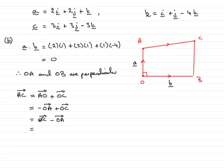Working this out now, O to C is 3, 3, minus 3 as a column vector. Minus O to A, which is 2, 2, 1. And if we subtract the components, we get 3 take away 2, which is 1. 3 take away another 2, which is 1. And minus 3 minus another 1, minus 4. So that's the vector A to C.